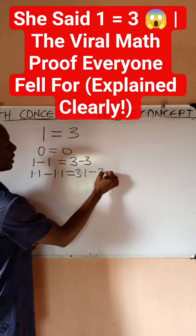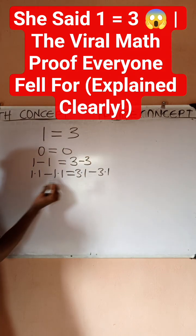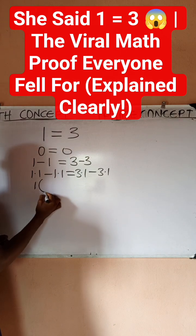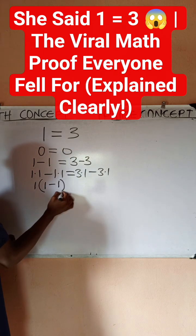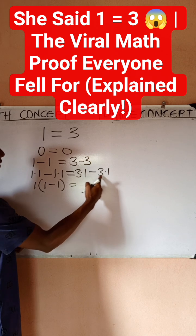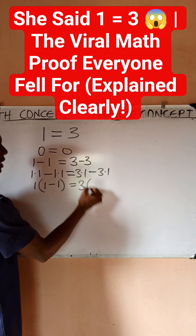So if you come here, since 1 is common, I can factorize. I'll have 1 times (1 minus 1). I come to this side, 3 is common, so I factorize 3. I have 1 minus 1.